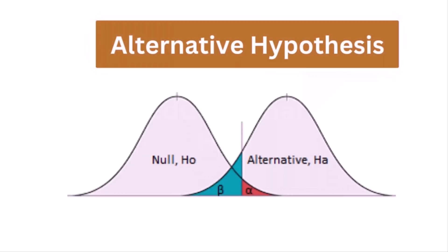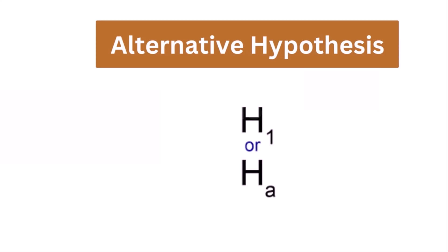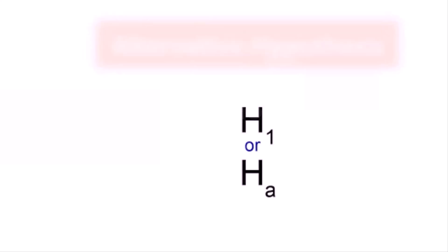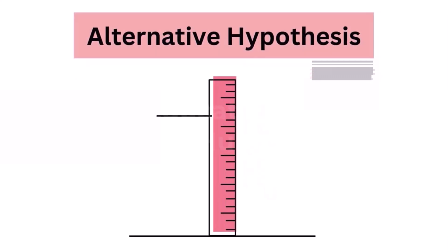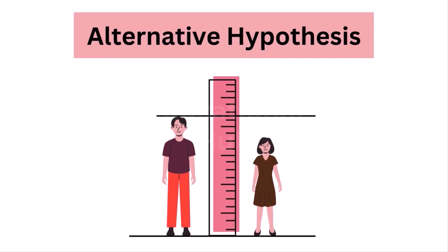2. Alternative hypothesis: The alternative hypothesis is an alternative to the null hypothesis. It is used to show that the observations of an experiment are due to some real effect. It indicates that there is a statistical significance between two possible outcomes and can be denoted as H1 or HA. The alternative hypothesis would be that girls are shorter than boys at the age of 5.